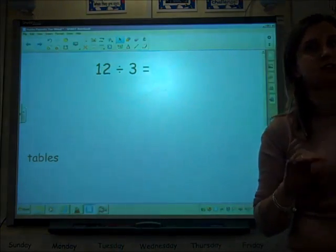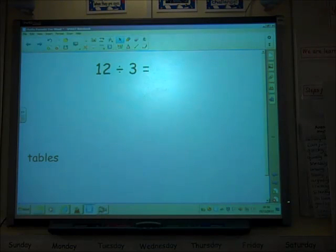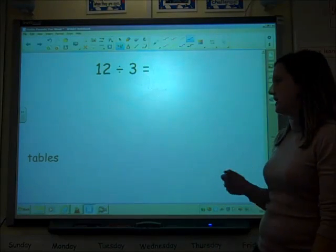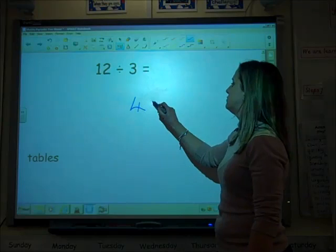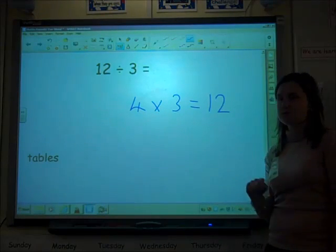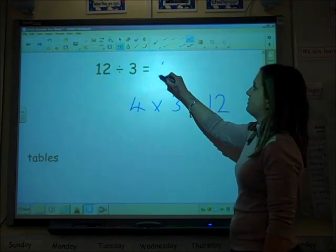We also like the children to make the link between their multiplication tables and dividing. So they know, oh hang on, we've been talking about grouping, groups of, in multiplication, in tables. I know four lots of three is 12. I know that because I've been learning my tables. I know four groups of three, so therefore I know 12 divided into three is four.